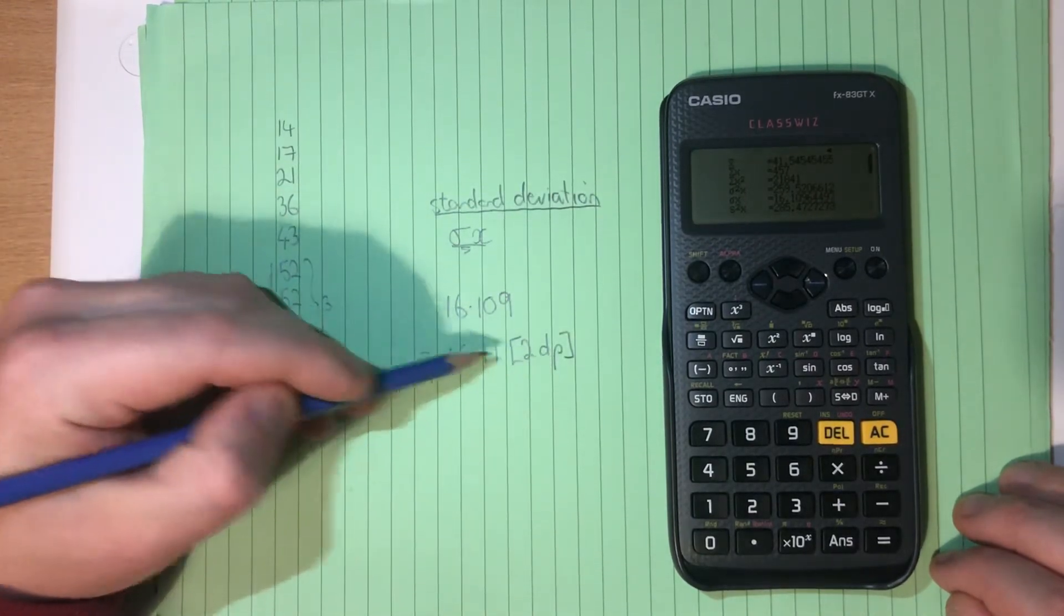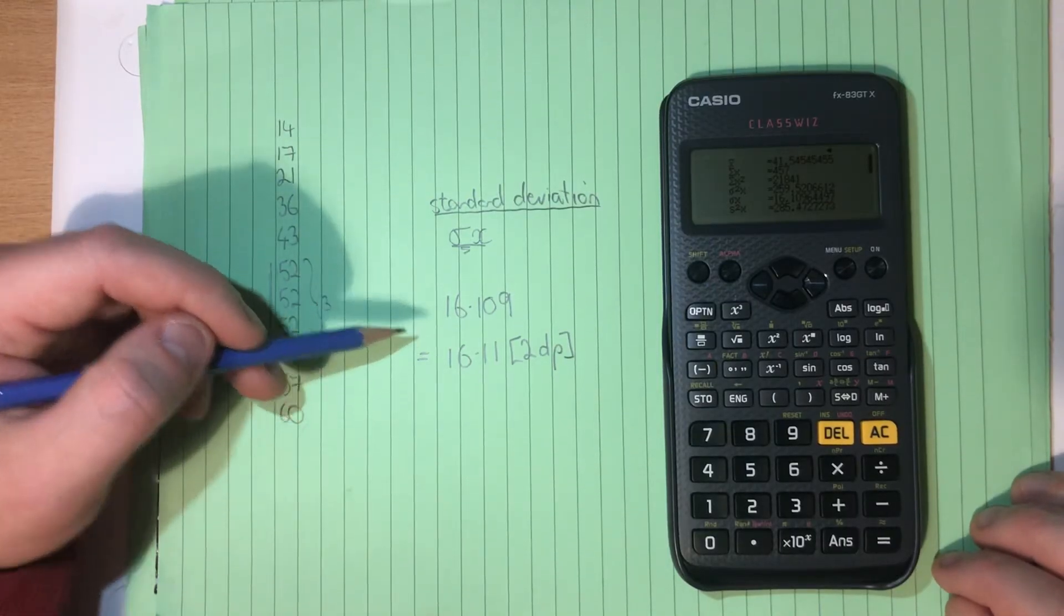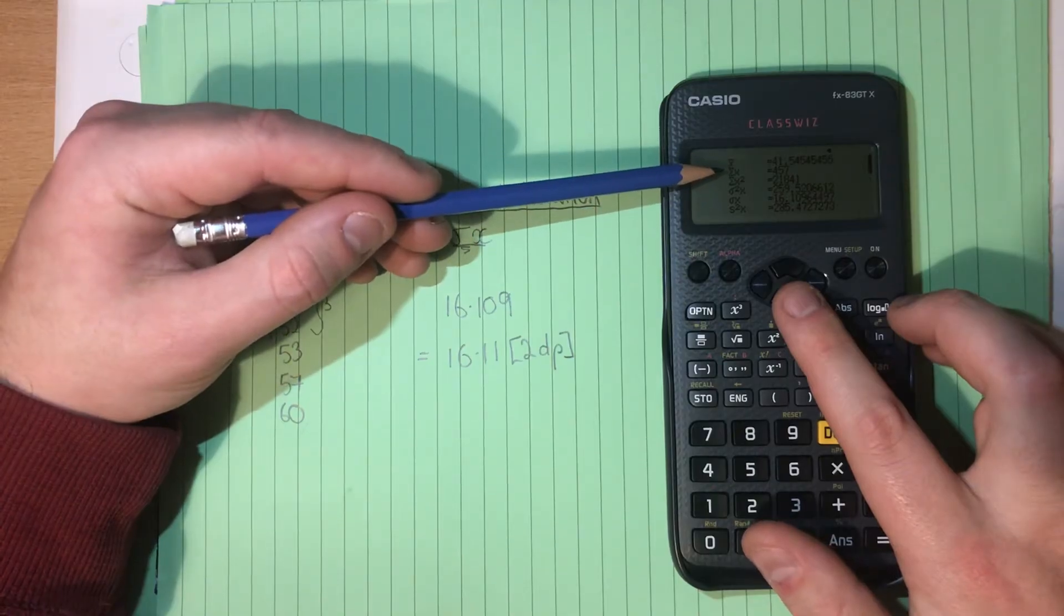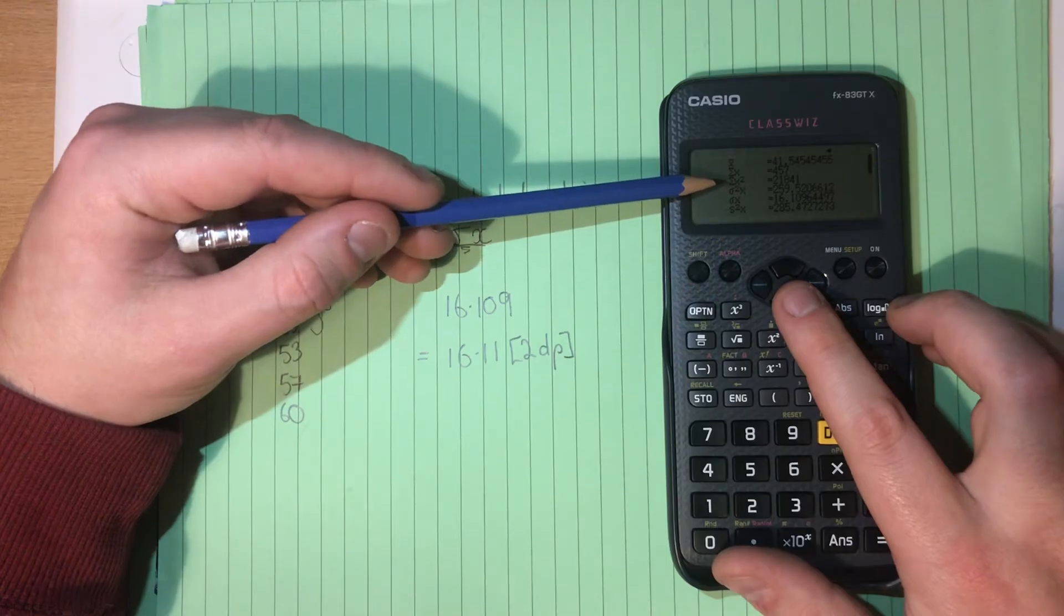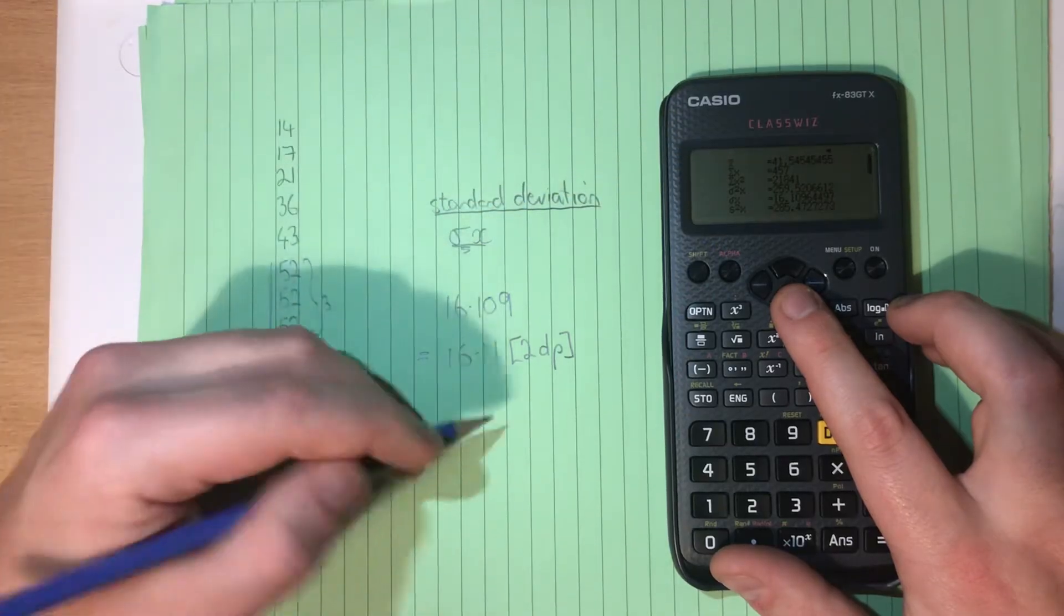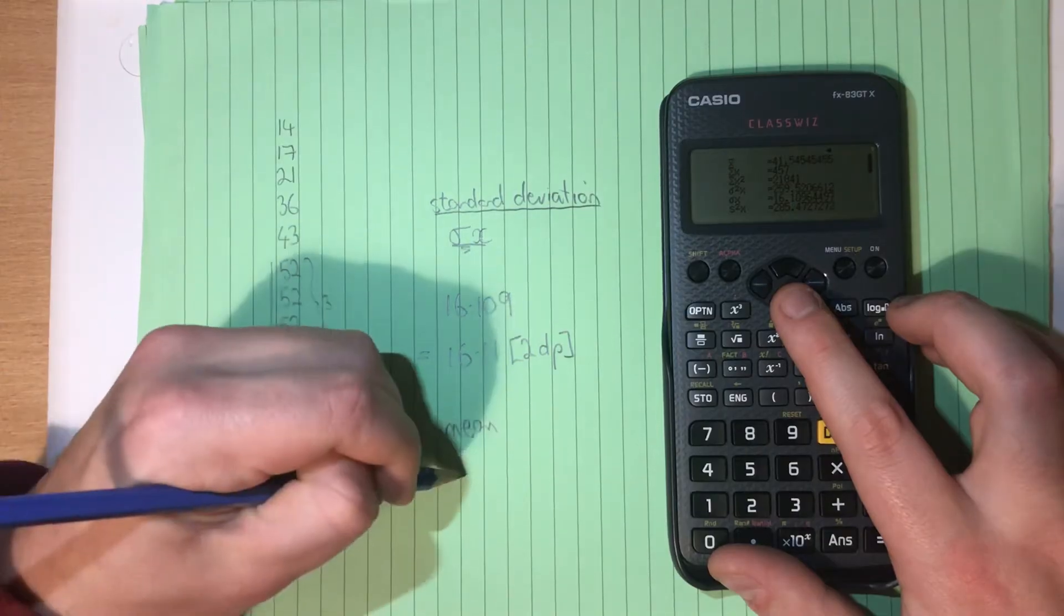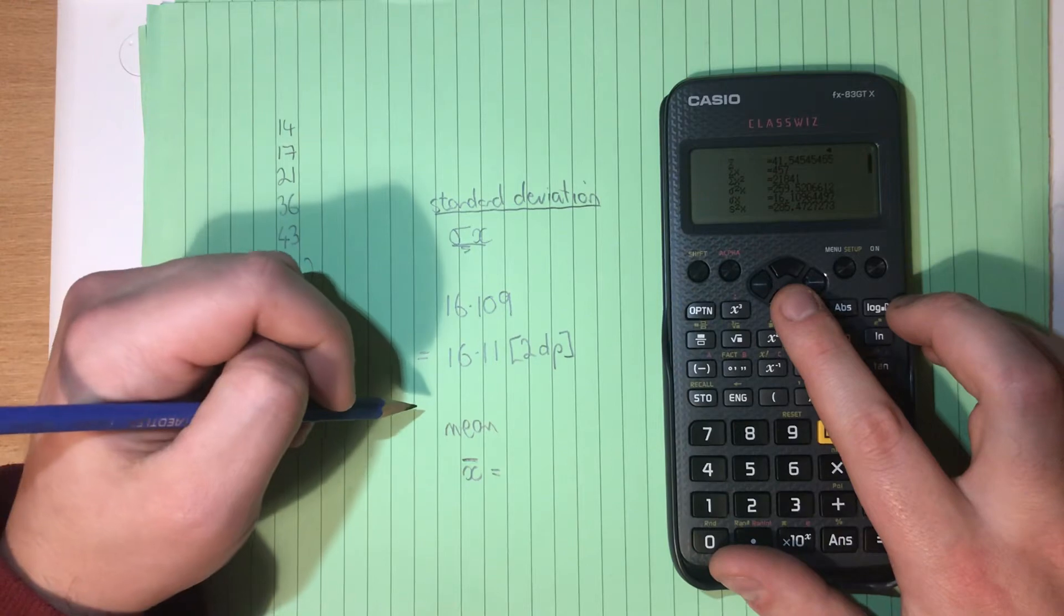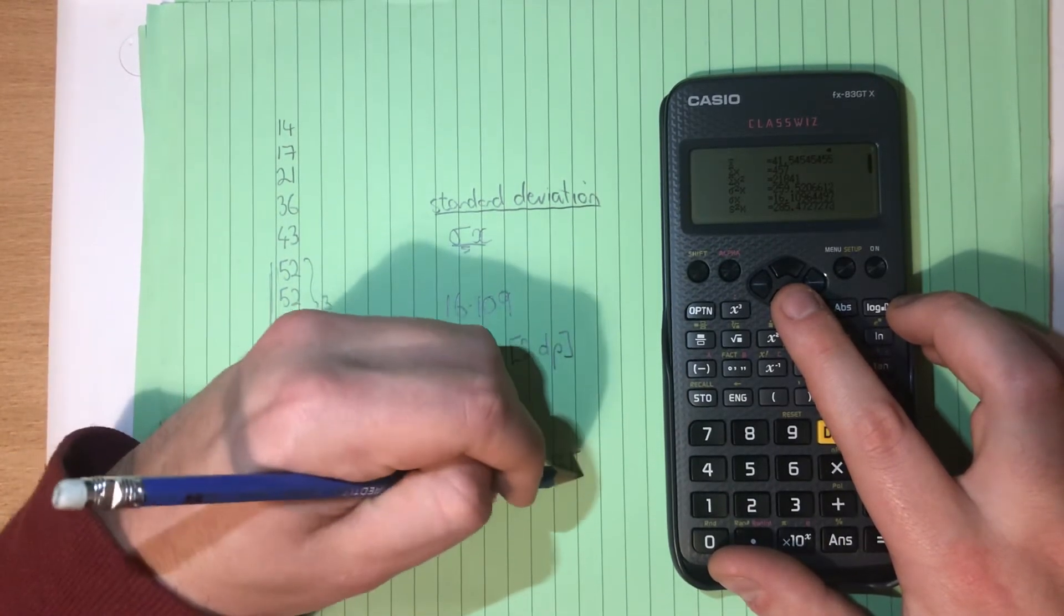So to two decimal places, the answer is 16.11, the standard deviation. So that's pretty nice. But we also see we get some other information in here. We get the sum of all of the values. That might be handy for some reason. And we also get the mean value, which is X bar. So we know X bar is equal to 41.55, correct, two decimal places.